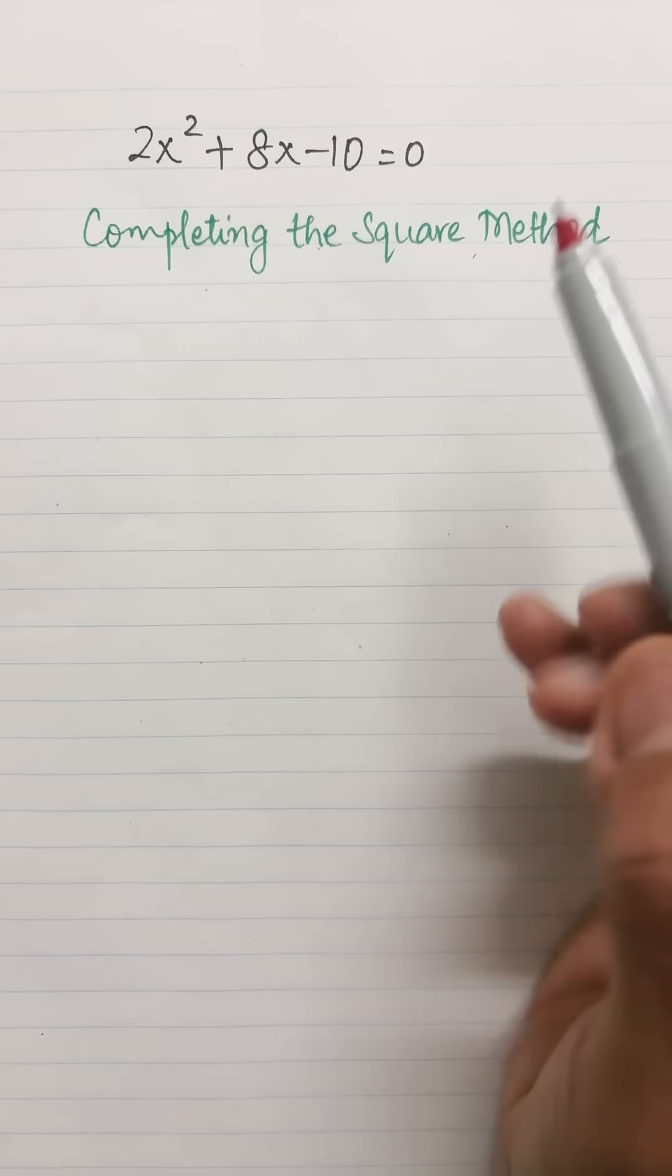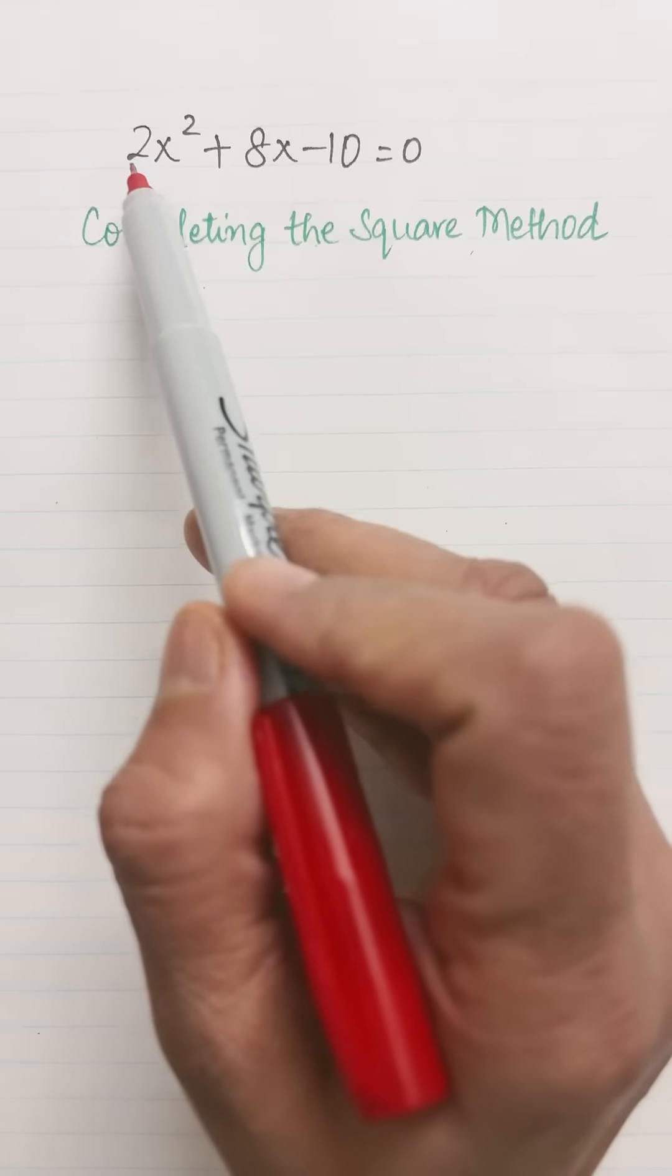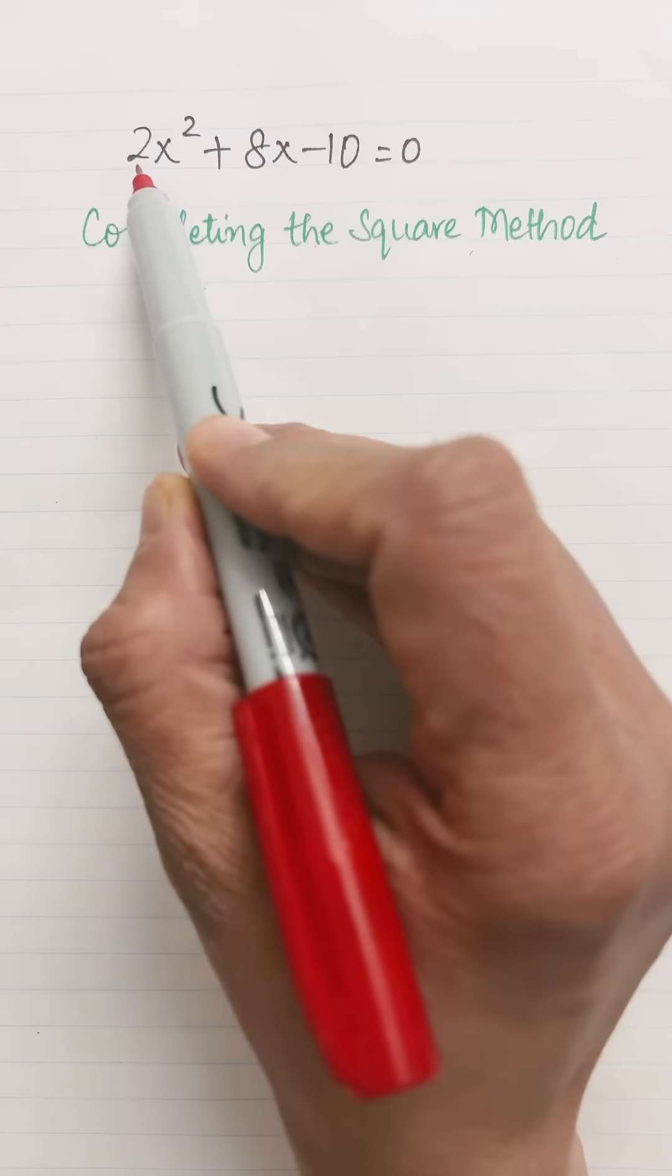Solve this quadratic equation by completing the square method. My first step is to see whether the coefficient of x² is 1 or not. If it is not, we will make it 1 by dividing the entire equation by 2.